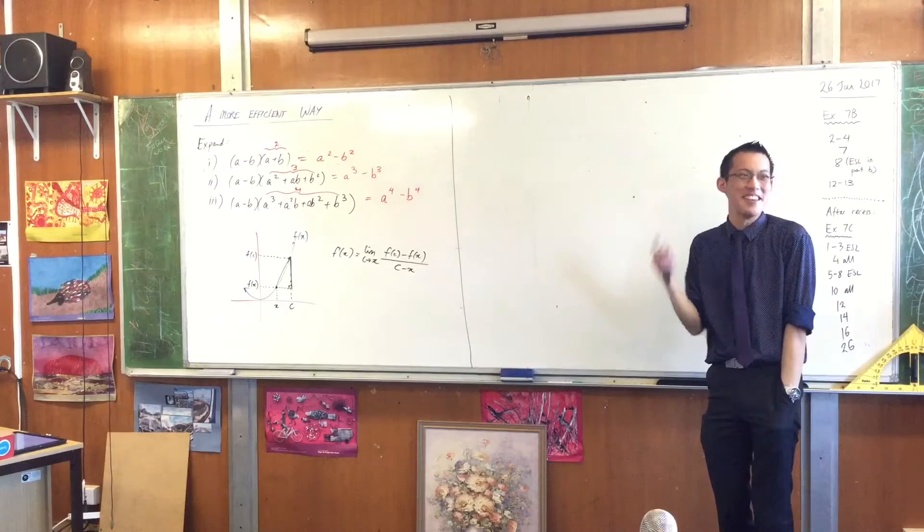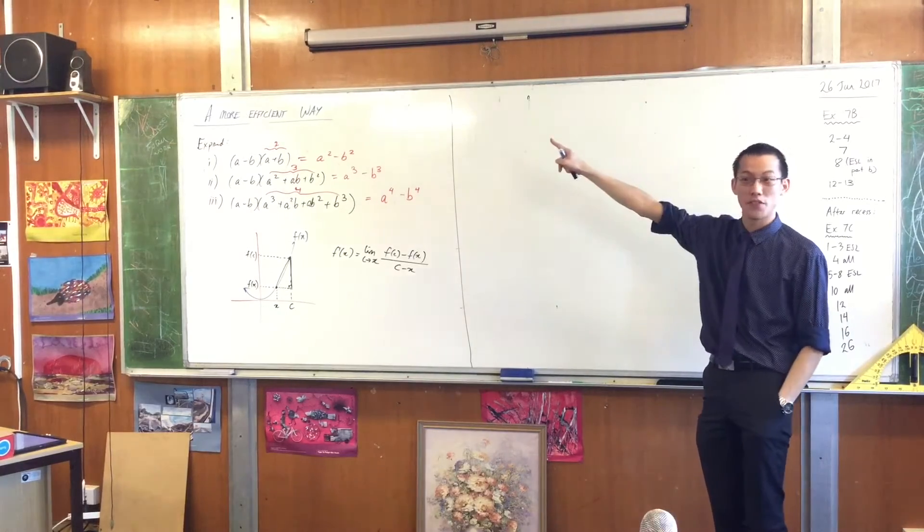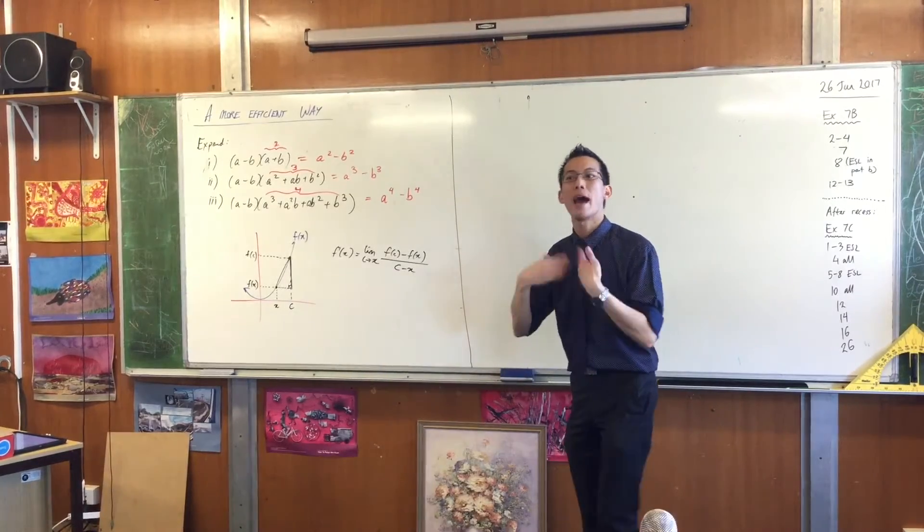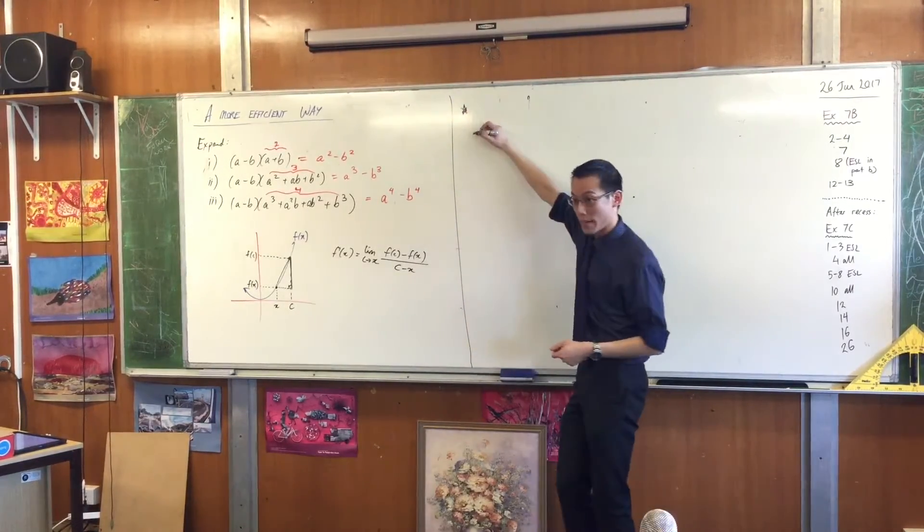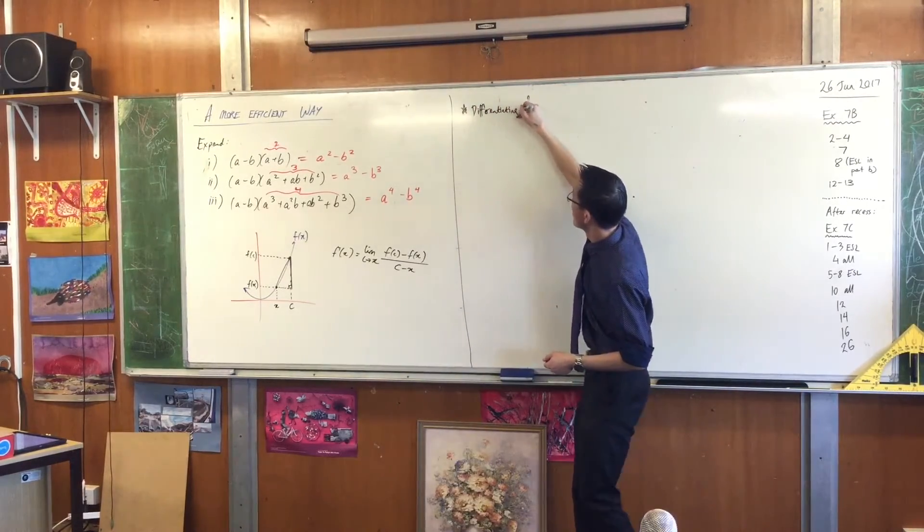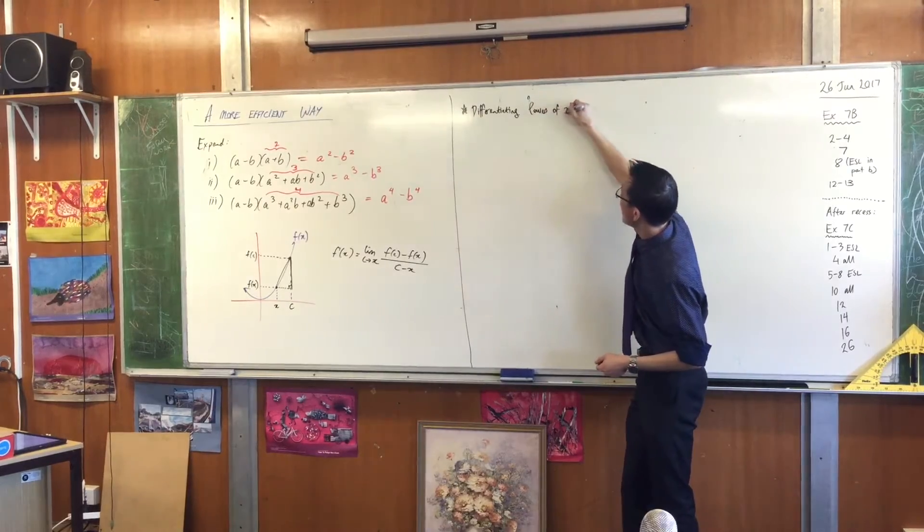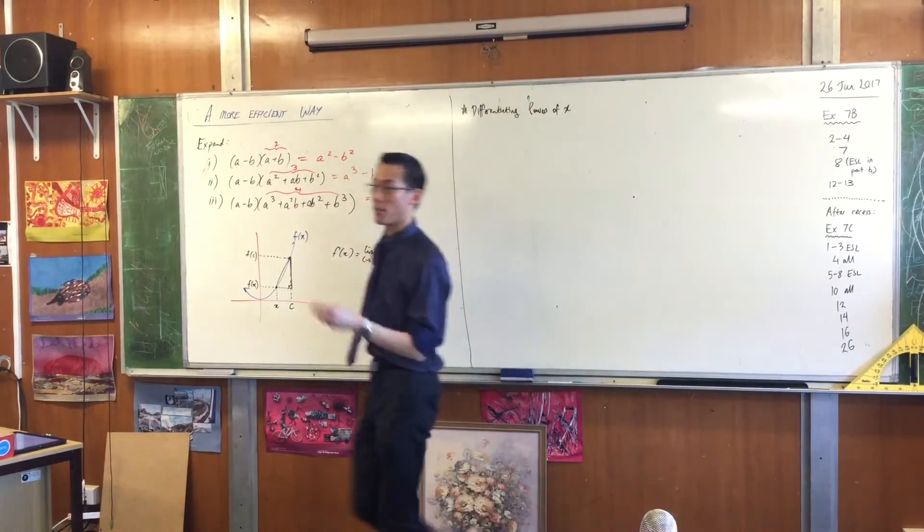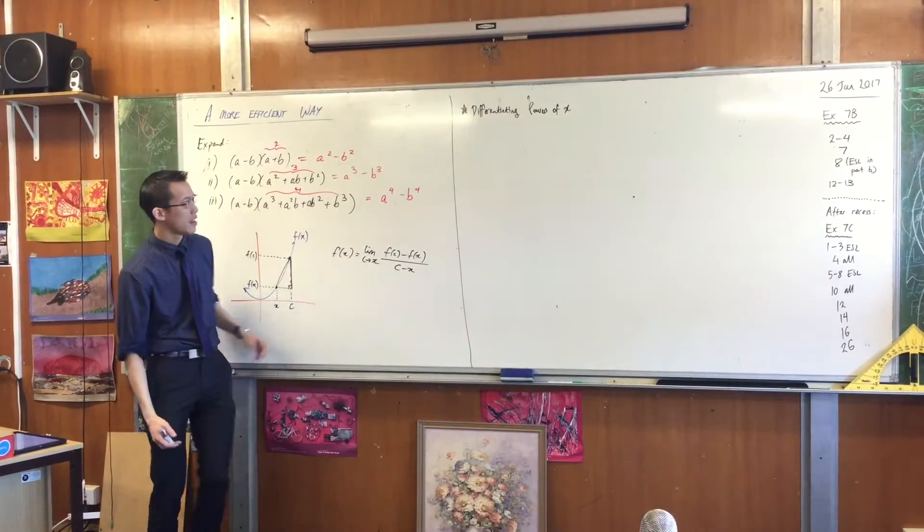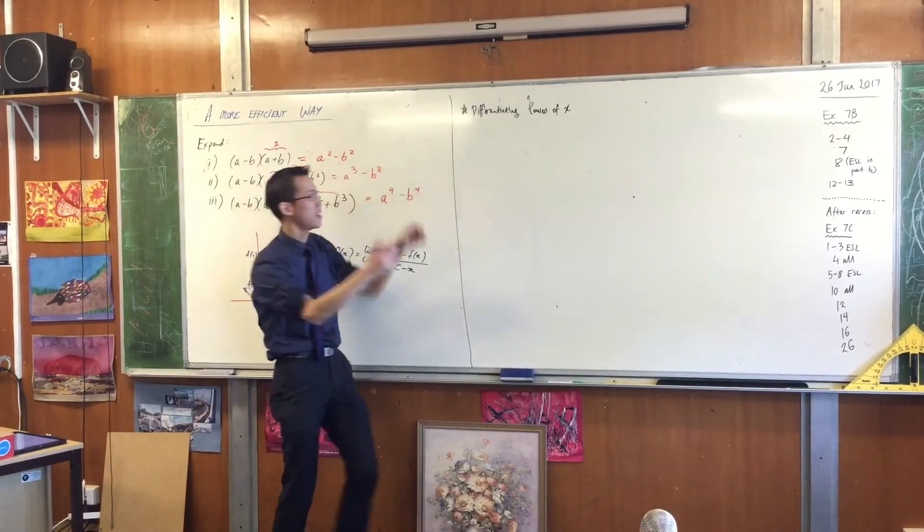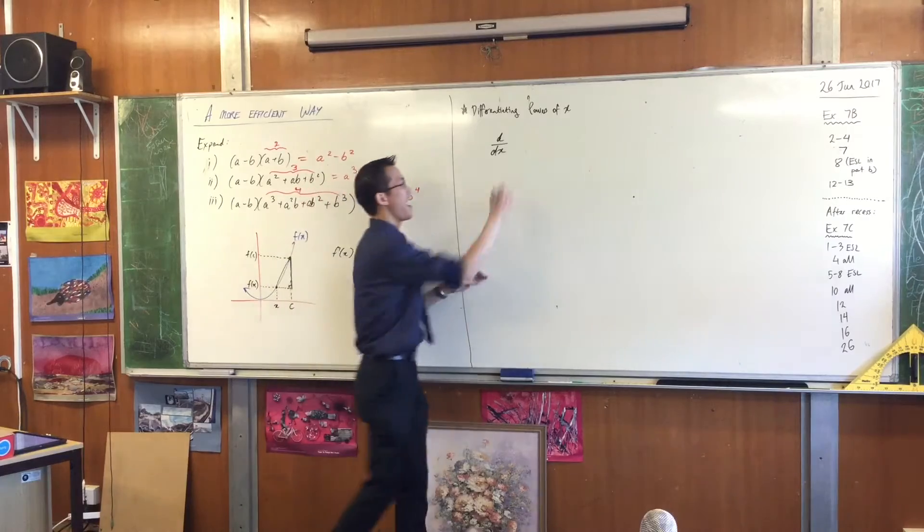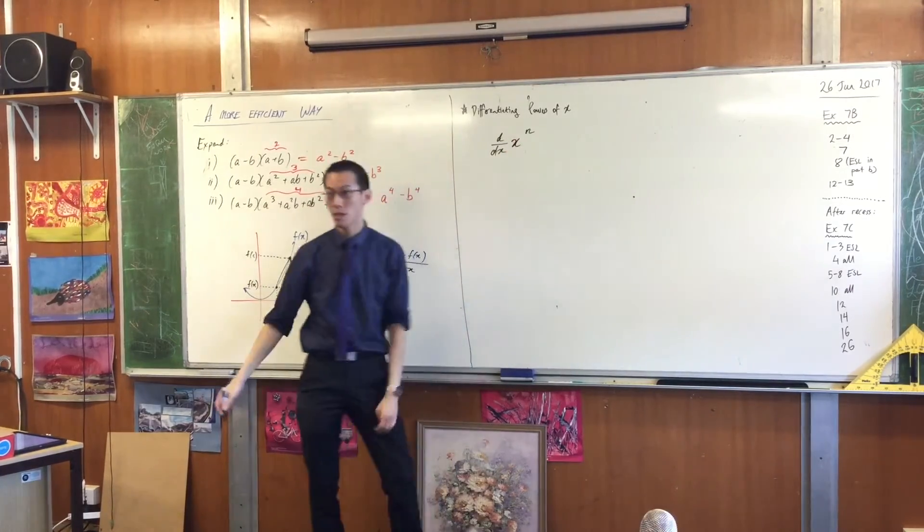But it's slow, so it would be great if we had a more efficient way. So what I want to do is consider, at the moment, everything we've been dealing with has been powers of X. So if you want to put a little subheading under this, it's differentiating powers of X. I mean like X squared and X cubed and X to the 4 and all that kind of thing. So generically speaking, every power of X is X to the power of some number.